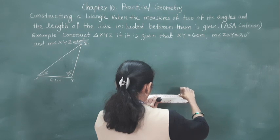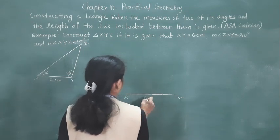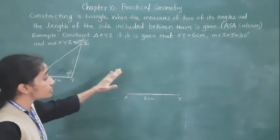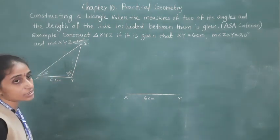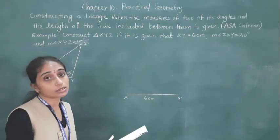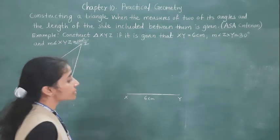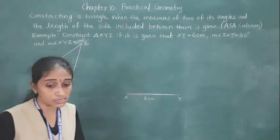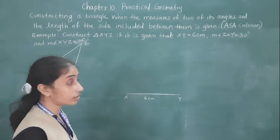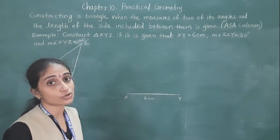So here — this is X, this is Y, and XY is 6 centimeters. This rough sketch helped us to construct the fair line. Now angle X — how much is it? 30 degrees. So how to draw the 30 degree angle? You know how to construct a 60 degree angle using ruler and compass. If we bisect the 60 degree angle, we will get the 30 degree angle. Angles which we can construct using ruler and compass, we use ruler and compass only. For angles which we cannot construct with ruler and compass, we have to use the protractor.